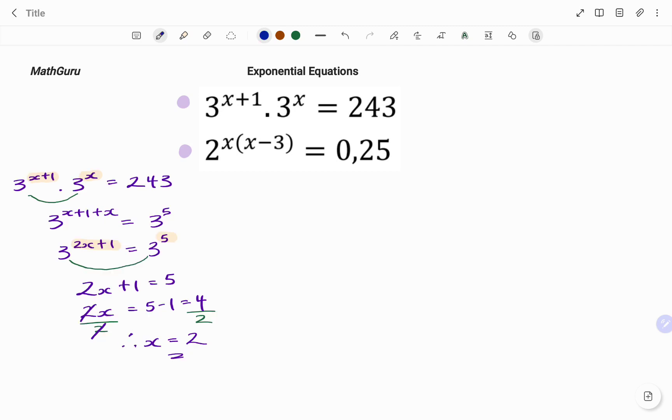For the next example, I have 2 to the power of x, bracket, x minus 3, equals 0.25.